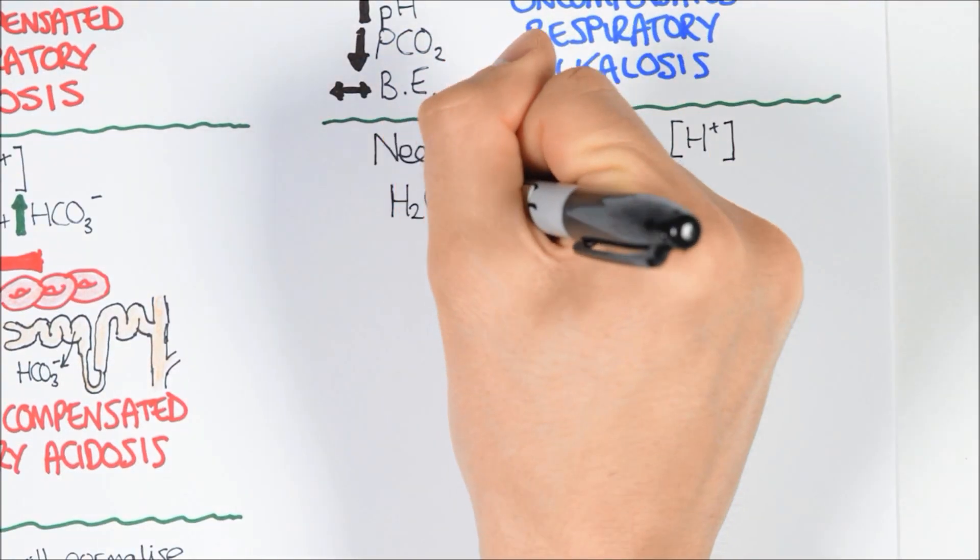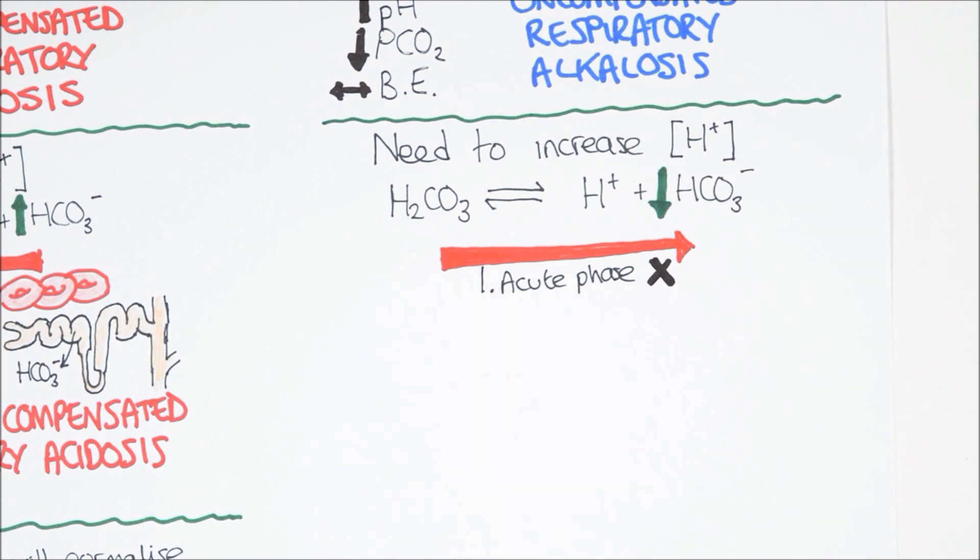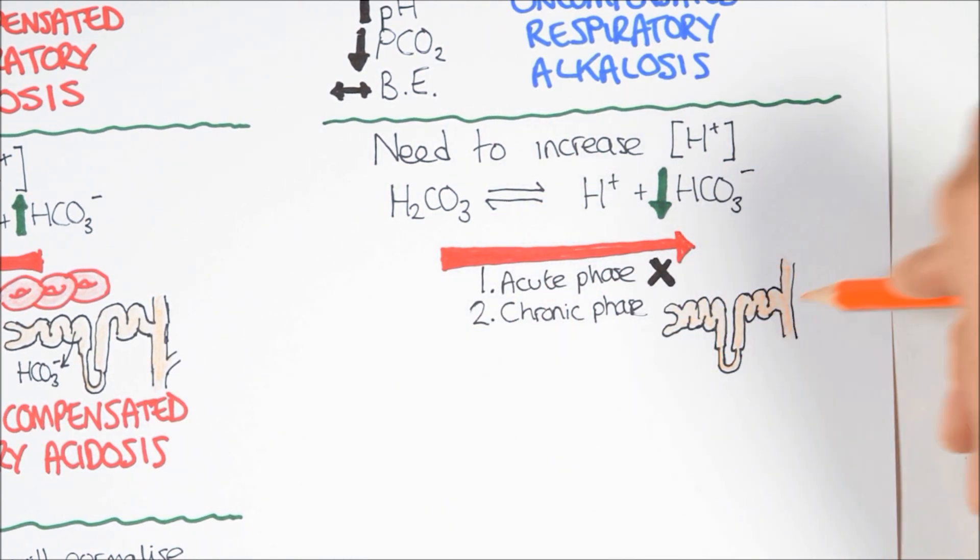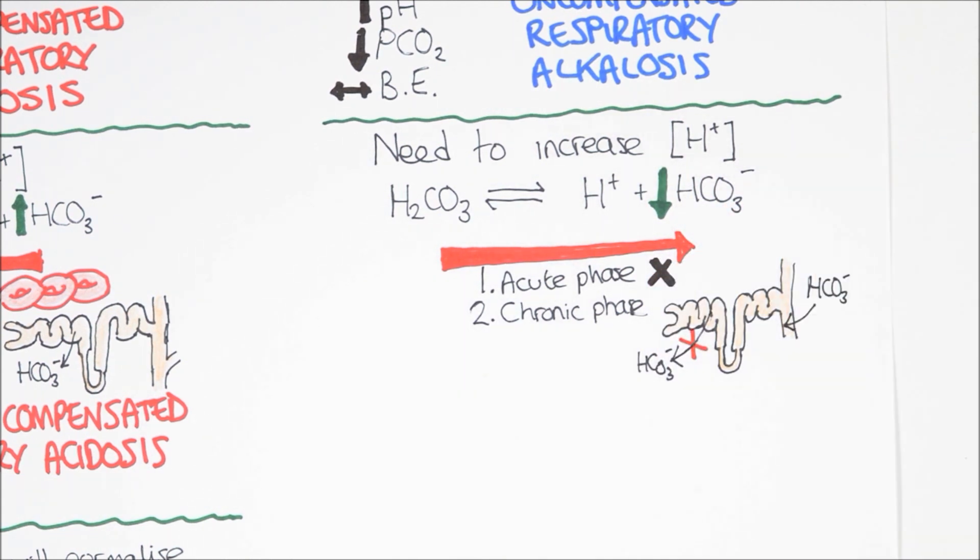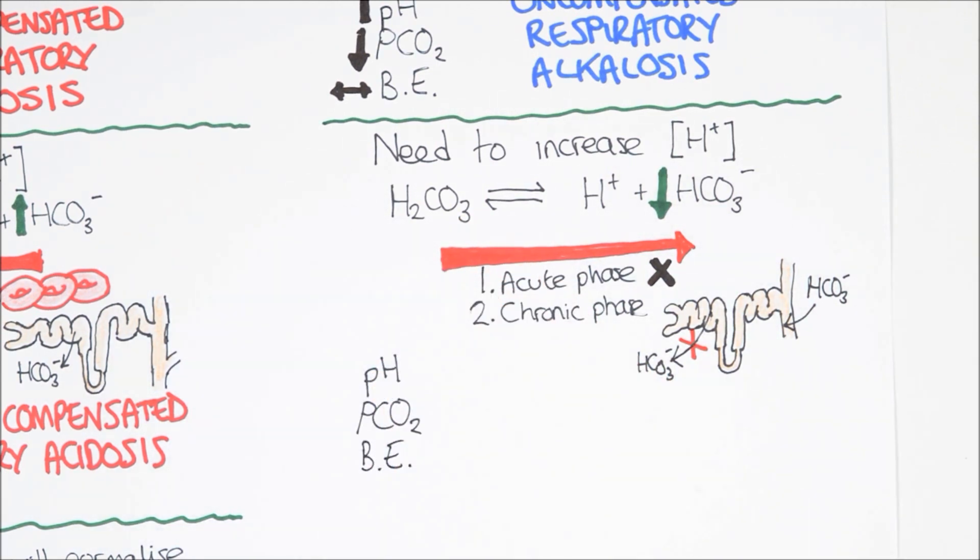To correct this, the body will try to increase the proton concentration in the blood. This response does not have an acute phase, but chronically, it will reduce the amount of bicarbonate reabsorbed in renal nephrons. It will also increase the bicarbonate secretion in the collecting ducts. A reduced plasma bicarbonate concentration will cause more carbonic acid to dissociate into protons and bicarbonate.